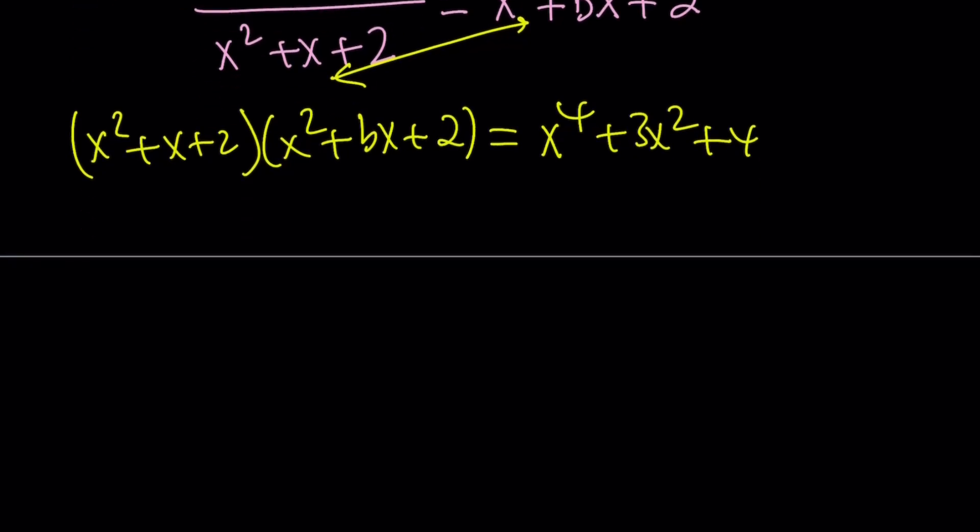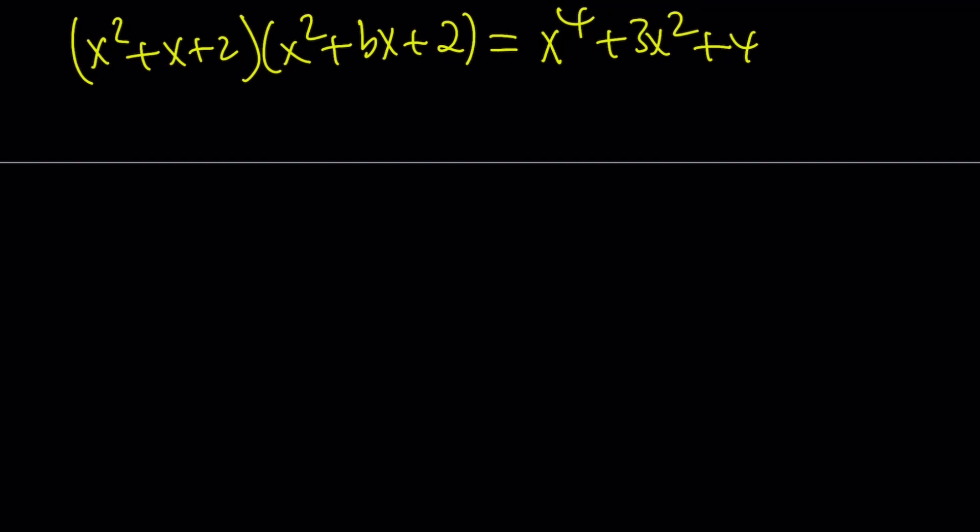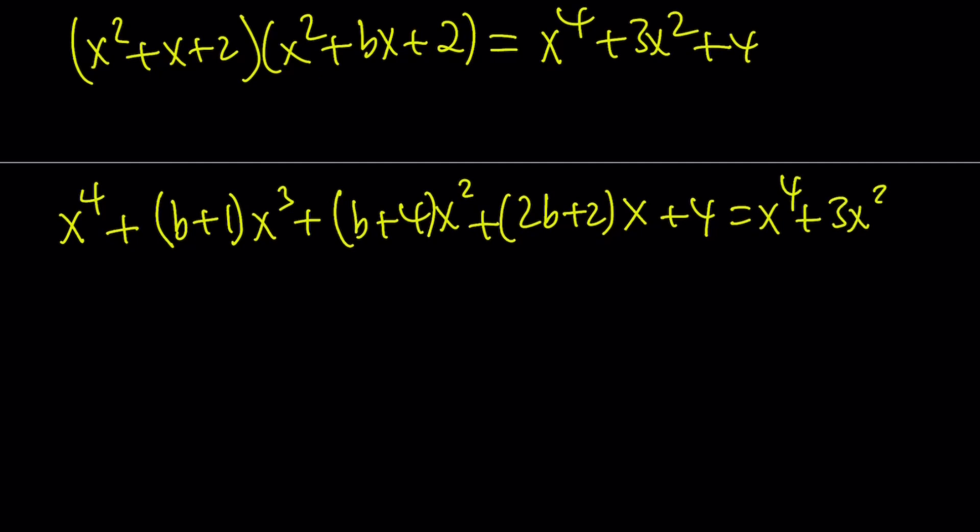So these are polynomials on either side. We're going to set them equal, arrange the coefficients, and then just solve the equation that way. So we're going to find the unknown b. Just to spare you the trouble, I'm going to give you what we get from the left-hand side. You're going to get x to the 4th plus b plus 1x to the 3rd plus b plus 4x squared plus 2b times x plus 4. And that is supposed to equal x to the 4th plus 3x squared plus 4.